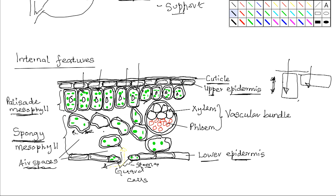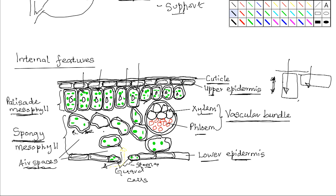Within the leaf we also have the vascular bundle. The vascular bundle consists of xylem and phloem tissues. The xylem conducts water and mineral salts from the roots to the leaf where they are used in photosynthesis, while the phloem conducts products of photosynthesis such as sugar away from the leaf to the rest of the plant.